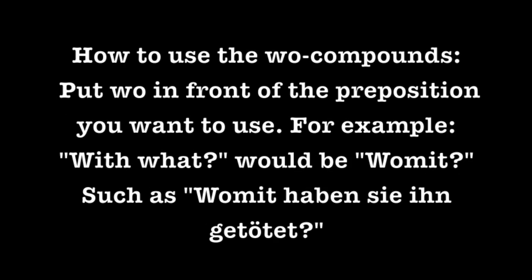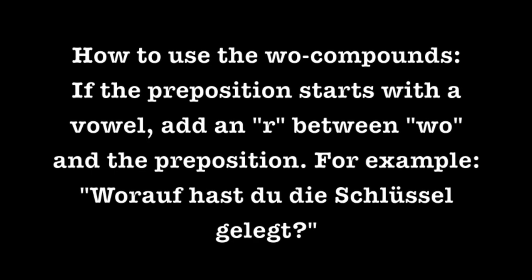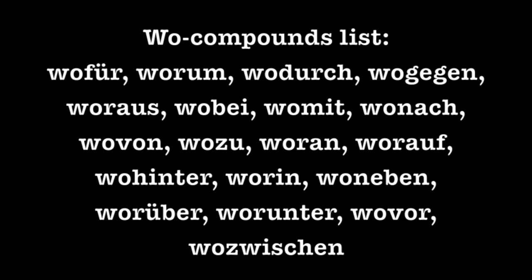How do you use the Wo-compounds? You simply put 'wo' in front of the preposition you want to use. For example, 'with what' would be Womit, as in 'Womit haben sie ihn getötet?' (with what did they kill him?). If the preposition starts with a vowel (A, E, I, O, or U), you insert an R between the Wo and the preposition. For example, 'Worauf hast du die Schlüssel gelegt?' (on top of what did you lay the keys?). You can use a Wo-compound with almost all prepositions, but some don't make sense — for example, 'wo ohne' wouldn't really work.